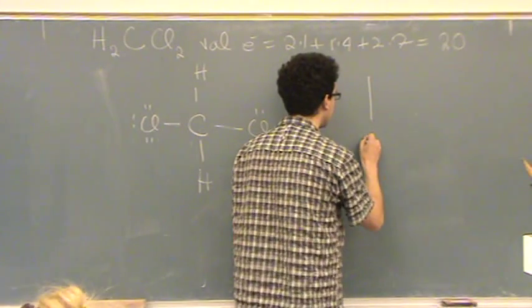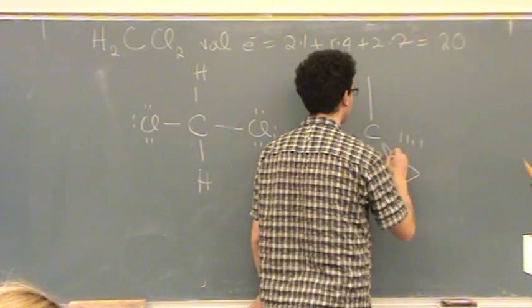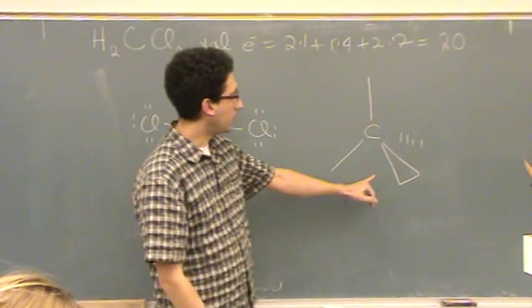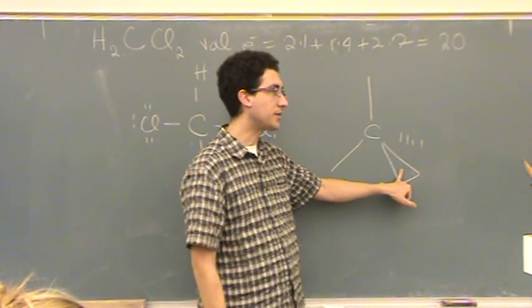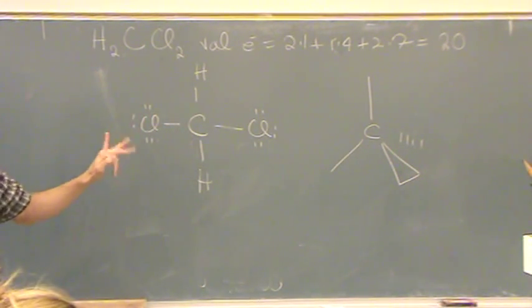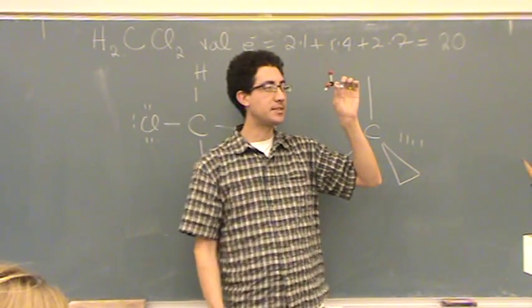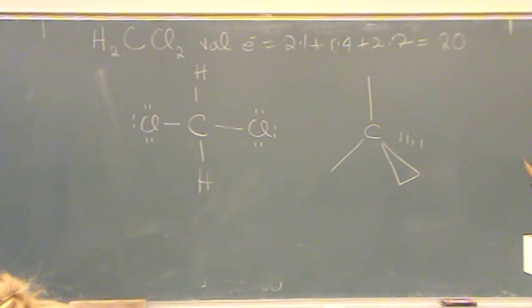Tetrahedral looks like this. Where two are in the plane of the board, one we draw typically as a wedge, looking like a triangle. That means it's coming towards you. And the other one as a dash, meaning it's going away from you. It looks like this, which I will also pass around. This is a tetrahedral shape. Okay? So you can kind of take a look at it as it comes around. That's exactly what this would look like.